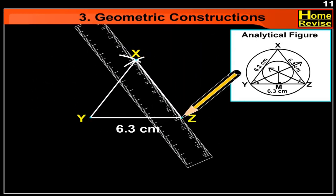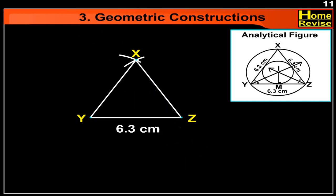This is our equilateral triangle XYZ. Now let us draw the angle bisectors of angle Y and angle Z.